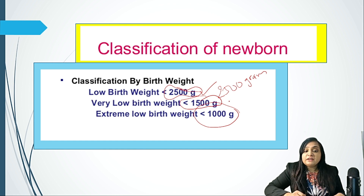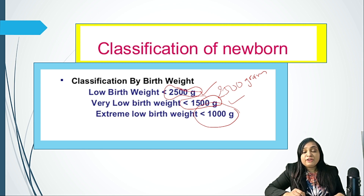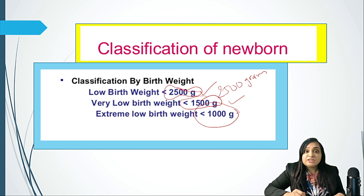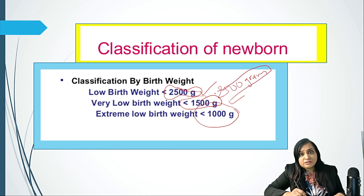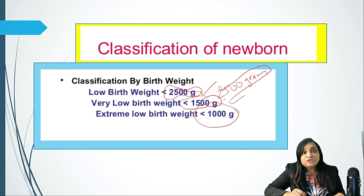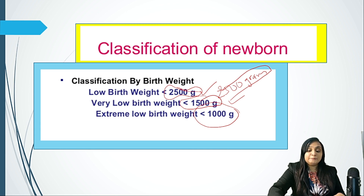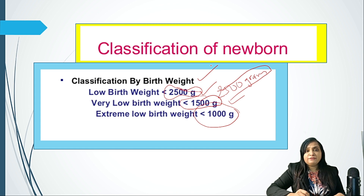If the weight is 1500 grams, that baby needs to be under observation for follow-up feeding and watched for complications by the Anganwadi worker or ASHA worker. And if it is less than 1000 grams, the child must be referred to a higher center. So by looking at the weight, even without knowing the gestational age, health workers can make an initial judgment and refer the child to a higher facility.